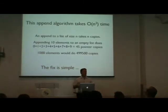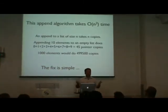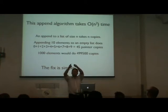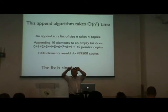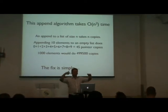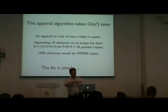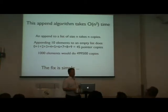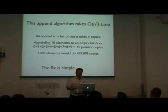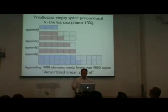This algorithm works, but it takes O(n²) time. You can see that pretty easily: first time you have zero elements, no pointers to copy; second time, you copy one; third time, two; and so on. This forms the classic n*(n-1)/2 triangle. So to append a thousand elements it would take about half a million pointer copies.